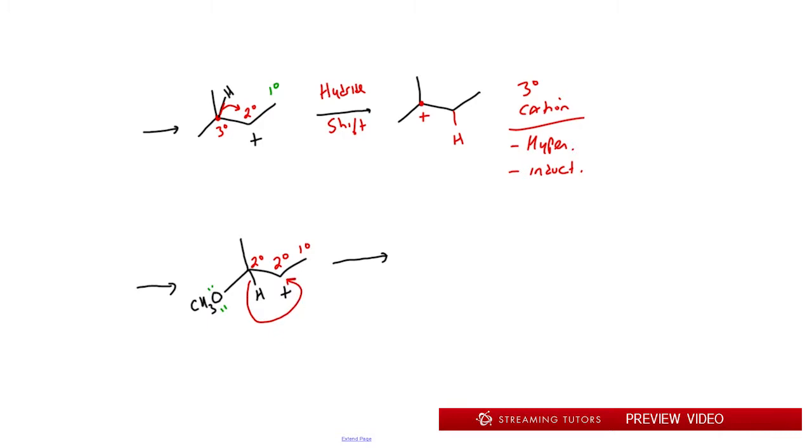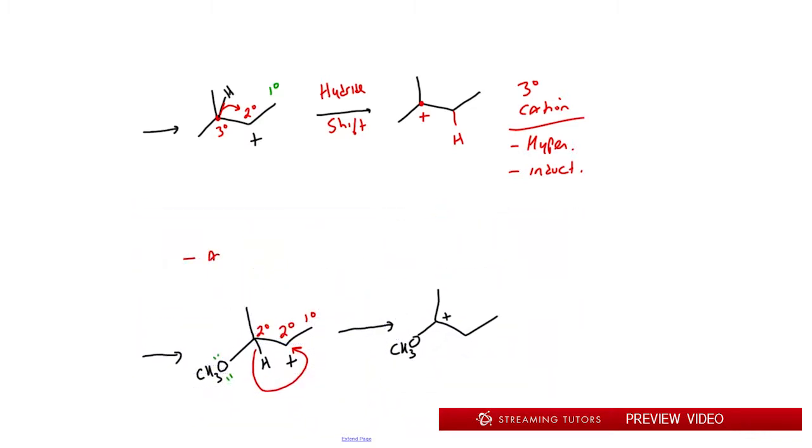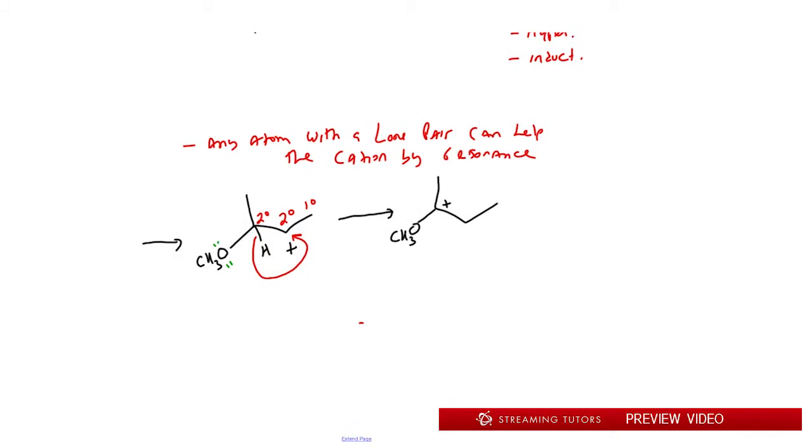By doing the hydride shift, there's an H here, by doing this shift over to here we now have a carbocation that's positive and it has an O attached to it. Any atom with a lone pair would allow this to happen, so let me write that down here as a rule: any atom with a lone pair can help the cation by resonance. This is very important because this allows us to do a shift in a way that normally wouldn't happen, and that is to go from the same degree shift, or even lower degree would do it.